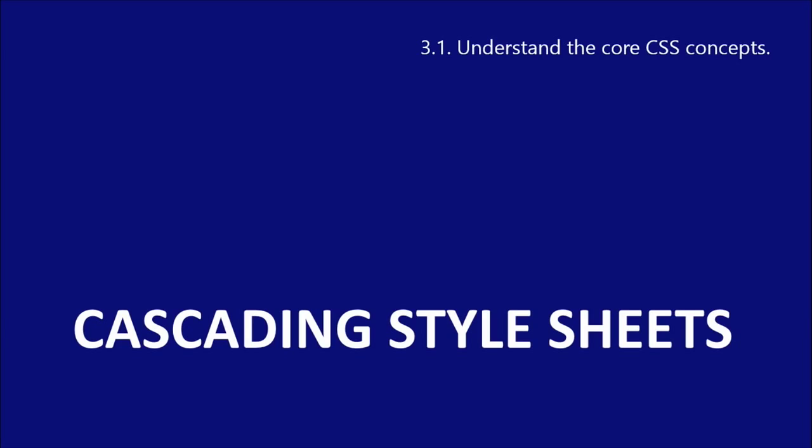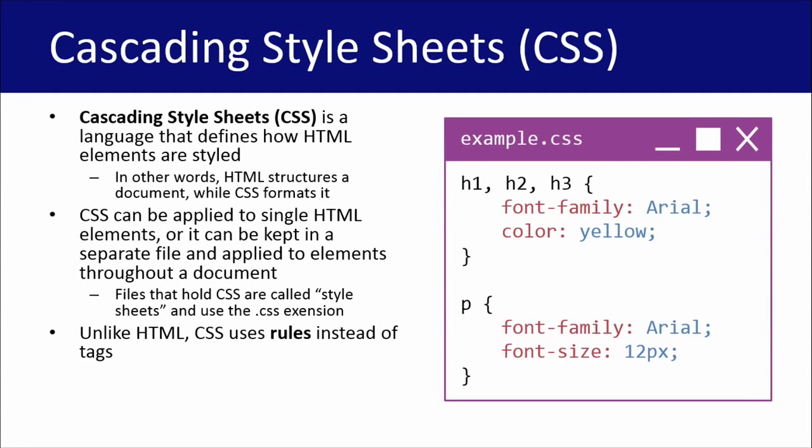All right, without further ado — cascading style sheets. CSS, or cascading style sheets, is a language that's separate from HTML, and it defines how elements are styled. HTML structures a document; CSS formats it. I think of these things as layers. If you were building a building, HTML would be the foundation — it sits on the bottom — and then you add CSS on top and to the exterior because it styles it. Later we're going to add functionality with another layer called JavaScript. You can't have one without the other, so you need HTML before you can really apply CSS, and then JavaScript is going to make things move too.